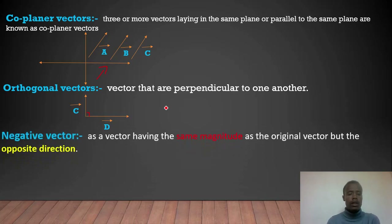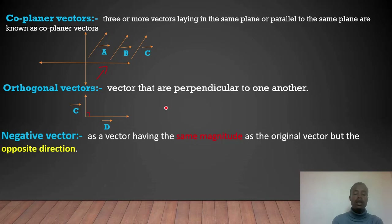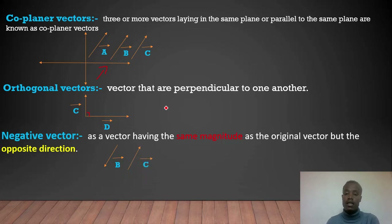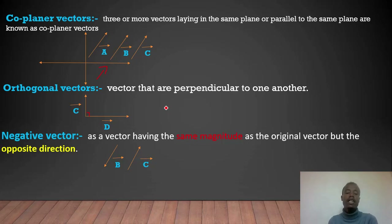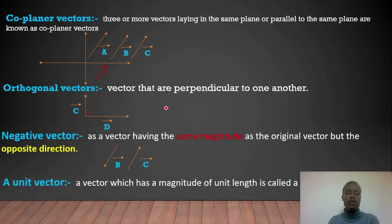A negative vector is a vector having the same magnitude as the original vector but opposite in direction. If vector B is the negative of vector A, they have the same magnitude but opposite directions. This type of vector is called a negative vector.